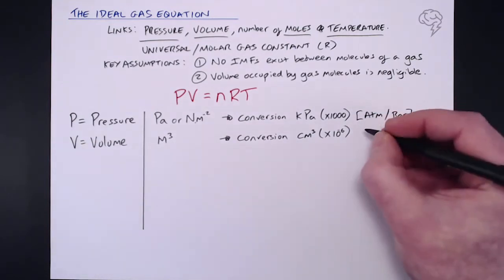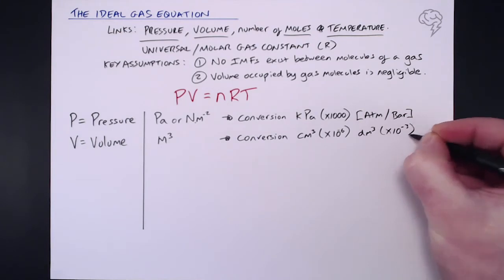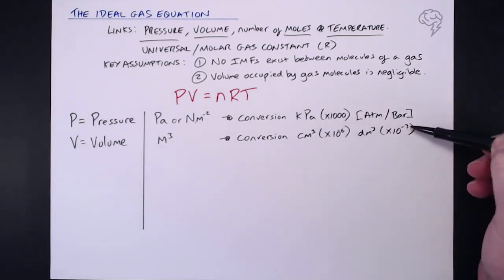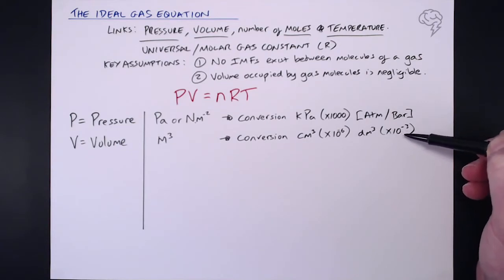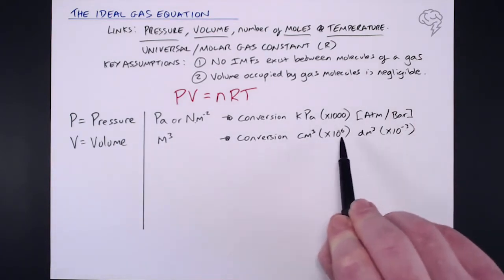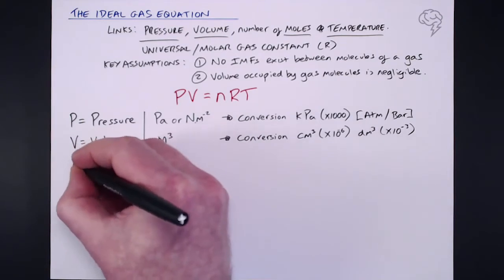If you're given the volume in decimeters cubed, what we need to do is multiply by 10 to the minus 3. So what I need to do is divide by a million here, or divide by a thousand here to convert it to meters cubed. Real simple conversion from centimeters, 10 to the minus 6. Decimeters, 10 to the minus 3.